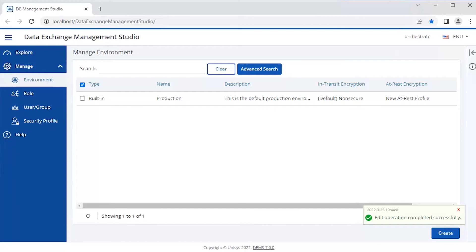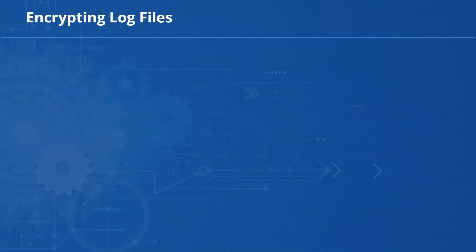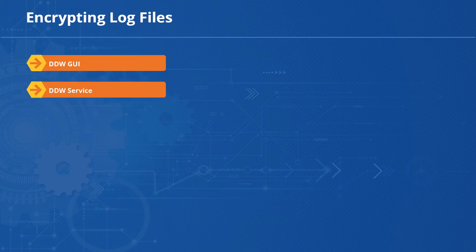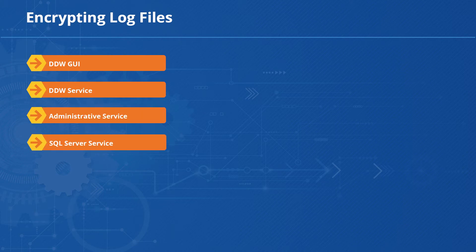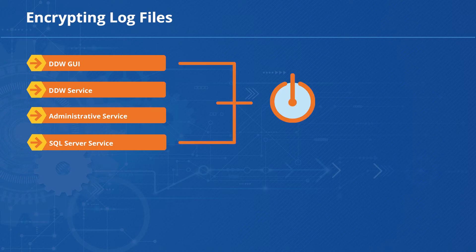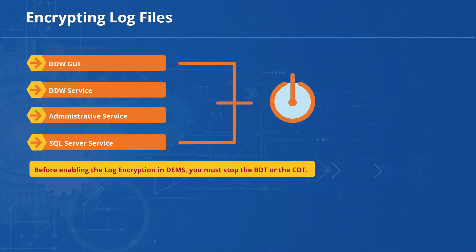Hereafter, any activities recorded in the files will be encrypted. After enabling the log encryption in DEMS, please ensure that if the DDW-GUI, DDW-Service, Administrative Service, or SQL Server Service is open or in a running state, restart these components for the new logs to be encrypted. Before enabling the log encryption in DEMS, you must also stop the BDT or the CDT for the new runtime service logs to be encrypted.